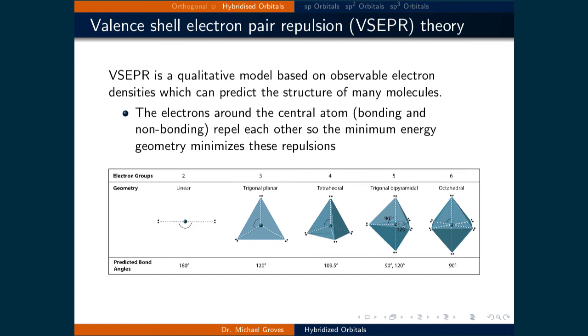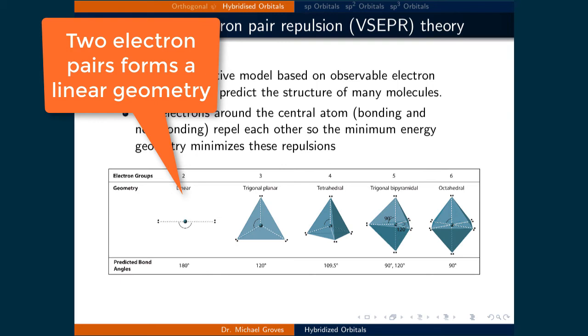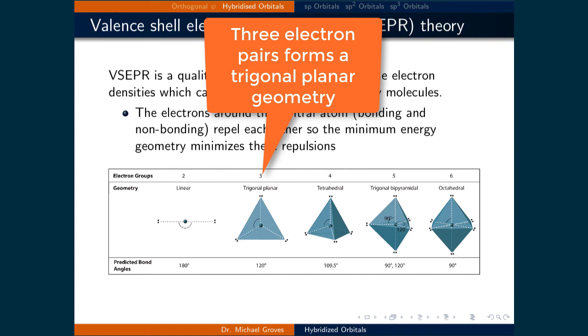The shapes for various scenarios are illustrated in the slide. For example, a central atom with two electron pairs will result in a molecular geometry where the two pairs will point in opposite directions in order to minimize their interaction. This makes a linear molecule.